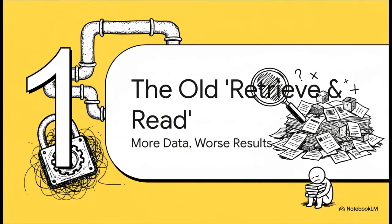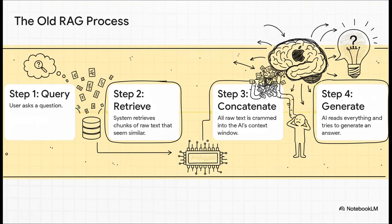Okay, first up, let's talk about the old way of doing things. This is the retrieve-then-read approach. And honestly, it's the clunky, inefficient process that CLRA is built to destroy. So the old process looks like this. You ask a question. The system then does what's basically a glorified keyword search, grabbing big chunks of raw text from your notes, your emails, whatever, that kinda look relevant. Then it just crams all of that messy, unfiltered text into the AI's limited brain, and basically just says, here you go. Good luck finding the answer in there.